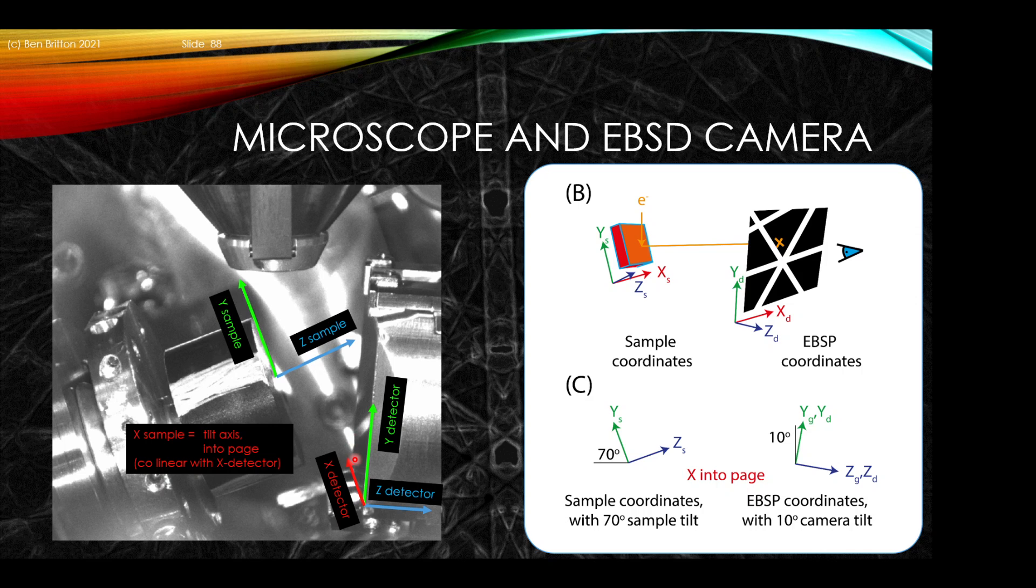We have a tilt axis that tilts us between the detector and the sample, so the X direction for this microscope is common between the sample tilt and the detector tilt. Therefore the Z and Y will rotate about this X vector going into the page, and both form a right-handed set. Conventionally we set up the experiment by tilting the sample to 70 degrees, so there's a 70 degree angle involved. There may also be a tilt of the camera, which we describe as about 10 degree detector tilt in this example.